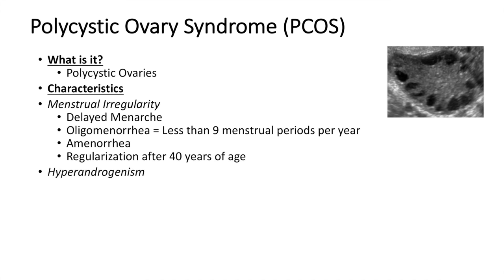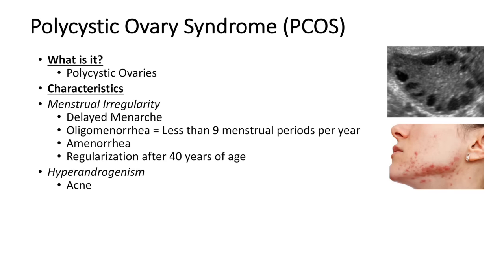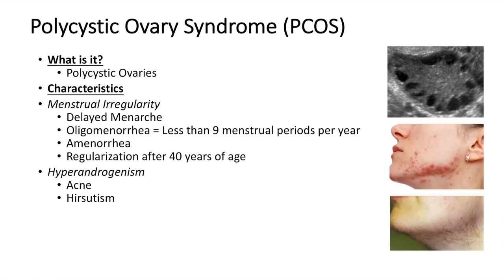Another main characteristic of polycystic ovary syndrome is hyperandrogenism. This is one of the big characteristics that causes a lot of the visible symptoms you see with these patients. The first one is acne, which is very common because of the high levels of androgens. Another one is hirsutism — an actual growth of hair — so these patients oftentimes will grow darker terminal hair, particularly on their face or on other parts of their body. And then another one is actually hair loss, almost a kind of male pattern hair loss due to high levels of androgens.